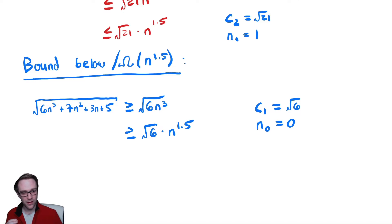In our definition for theta, though, we said that there was one n naught. We found two. Choose the bigger one. That's all you need to do. For our upper bound, we required that n was at least one. For our lower bound, we require that n was at least zero. If it needs to be at least one and at least zero, it needs to be at least one. That is a harder requirement to meet.